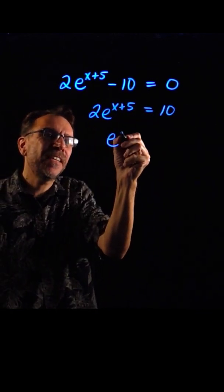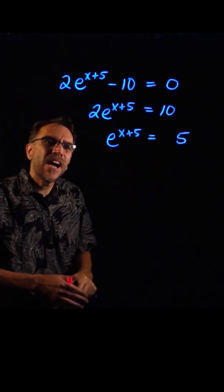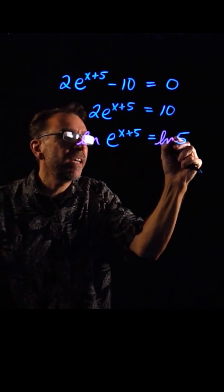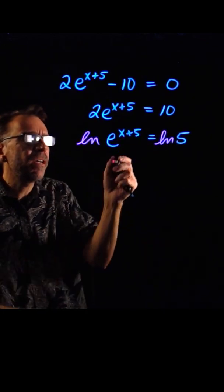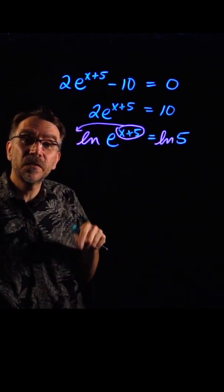Next, dividing by 2, we have e to the x plus 5 equals 5. Now, once we have the exponential isolated, we can apply the natural log to both sides. In this case, the natural log to both sides will allow us to apply the property of the log where we can bring those exponents down as coefficients.